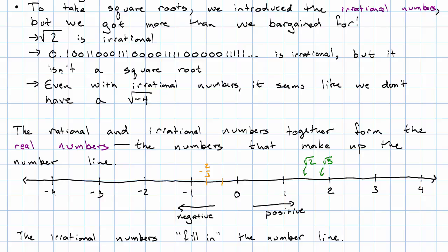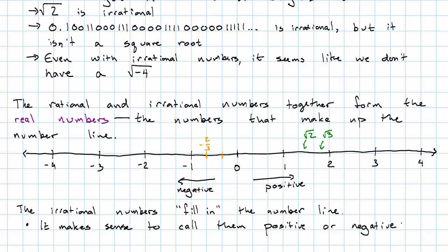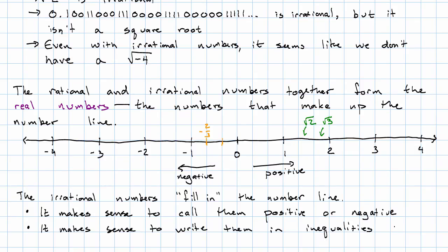The irrational numbers are still numbers on the number line. It makes sense to talk about them being positive or negative. And it makes sense to write them in inequalities. For example, root 2 is less than root 3. Those are the real numbers.